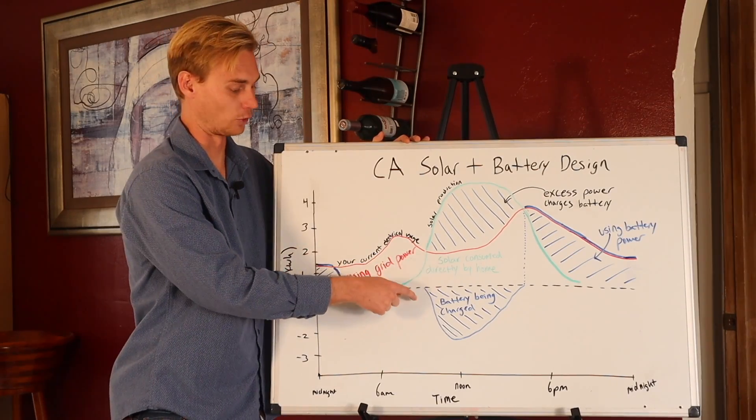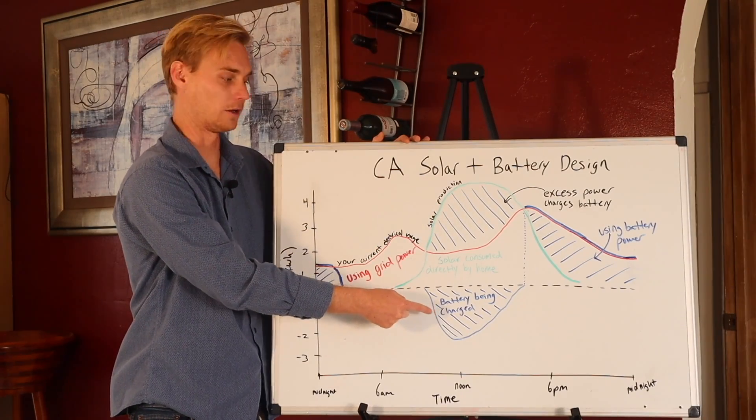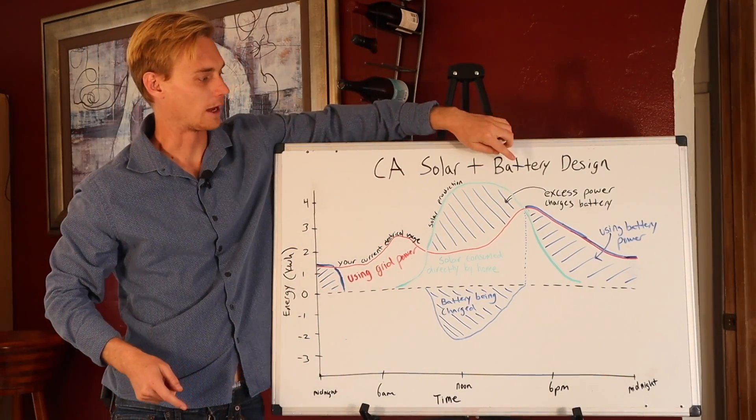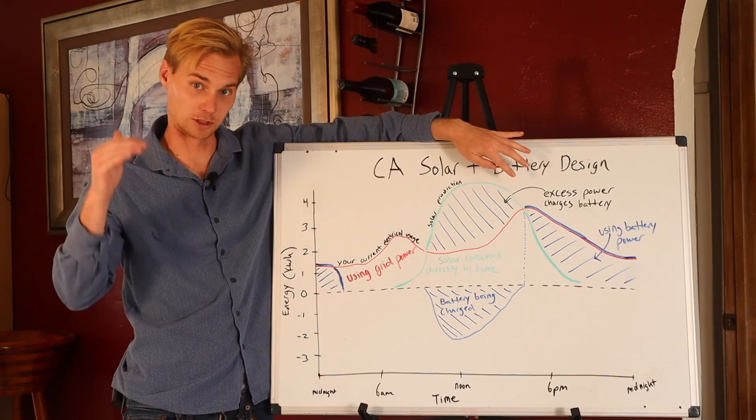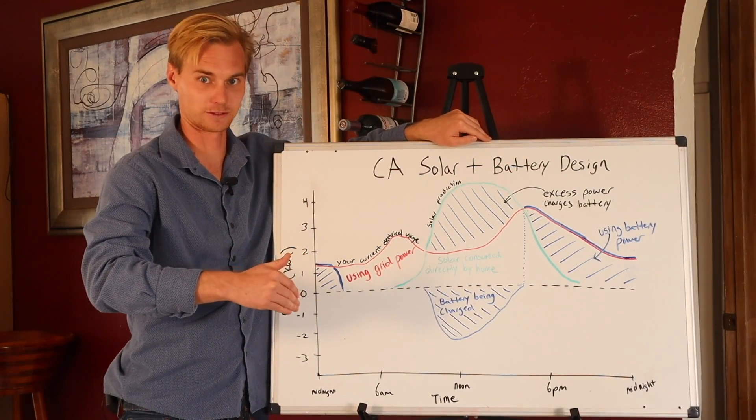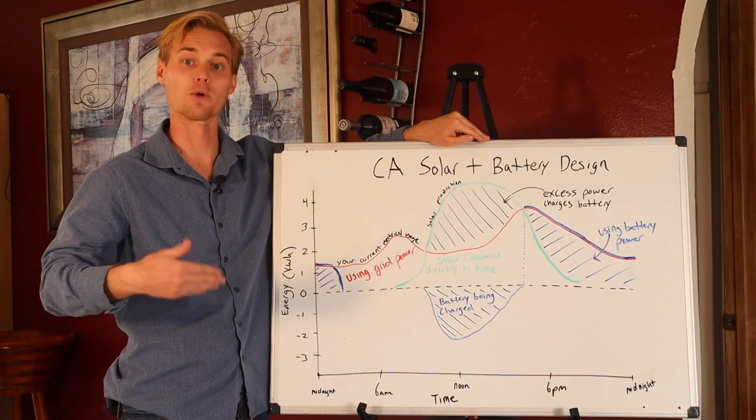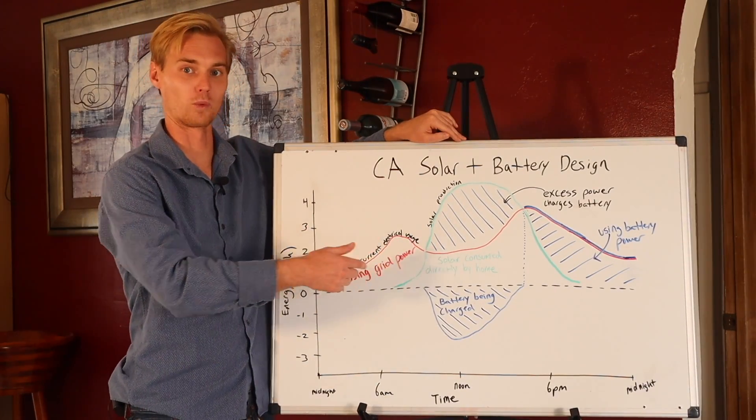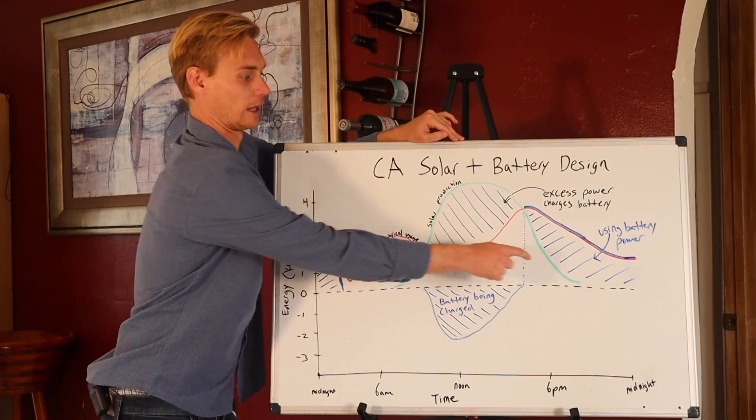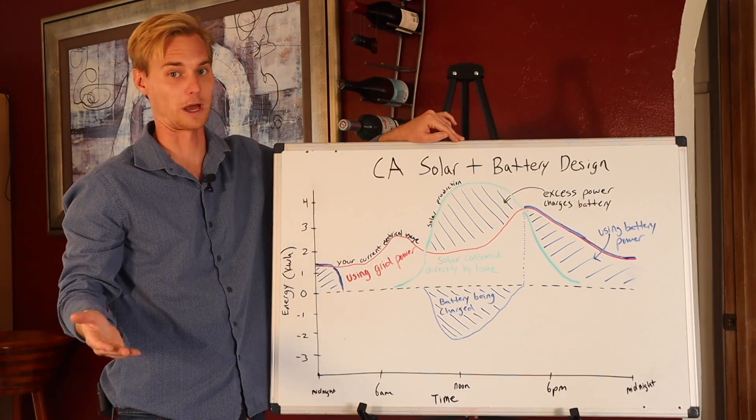And then in the evening time, as the solar production dips below what the home needs, the battery will then supplement what the solar is giving the home to power the house, up until the point when the sun totally sets. And now, like right here, for example, you're completely using the battery.